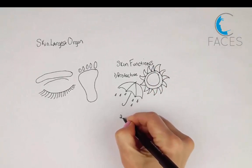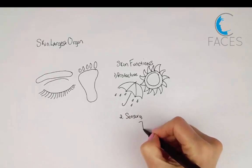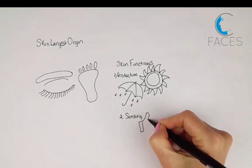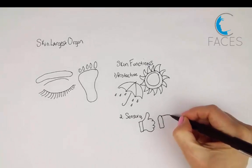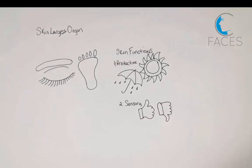Another function of skin is sensory. Through different types of sensory receptors, the skin allows us to continuously monitor our environment. Mechanoreceptors help regulate the body's interactions with objects around us.